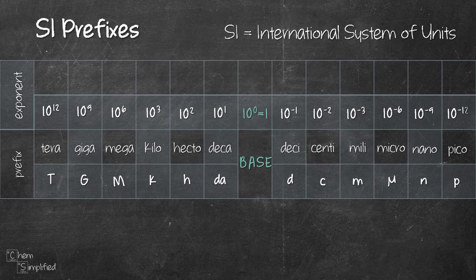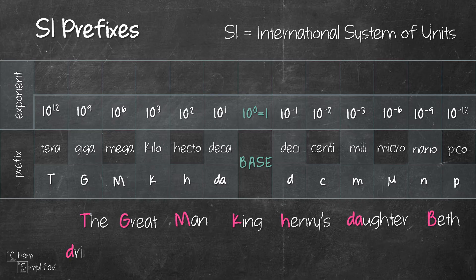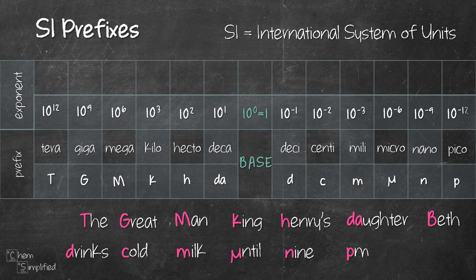As promised, we're going to remember these prefixes using a simple mnemonic I made up. A mnemonic is like a story you make up to help you remember better. It goes like this: "The great man, King Henry's daughter Beth drinks cold milk until 9 pm." I use Beth to represent the base, and then each word is represented by the abbreviation for the prefix in order from tera to pico.